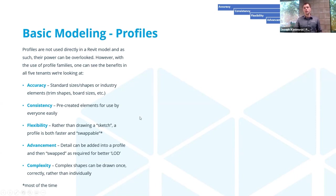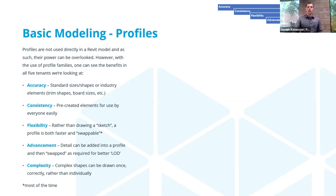Advancement: we can get greater and greater detail. If we put in a particular profile and then need to go back and add a drip on the bottom, we can add it, swap it back in, and it adjusts all of them. Complexity increases render time and modeling time, but sometimes it's incredibly important. We may be contracted for LOD 200, 300, 350 or more — and that complexity, accuracy, and detail all go into that.